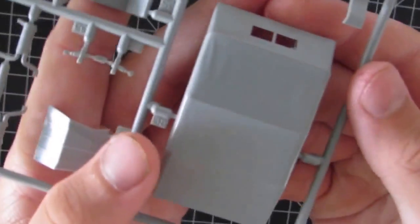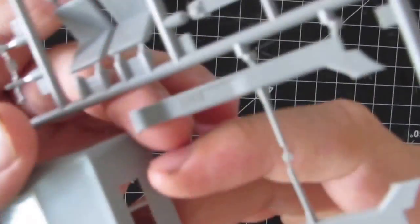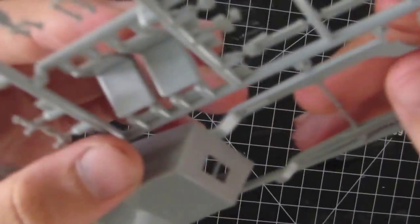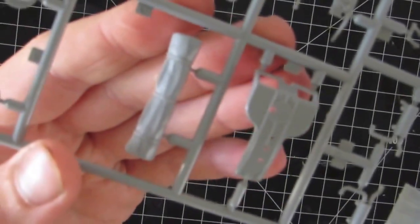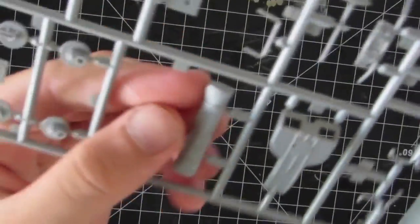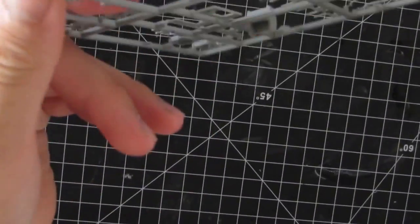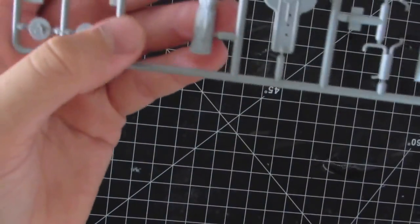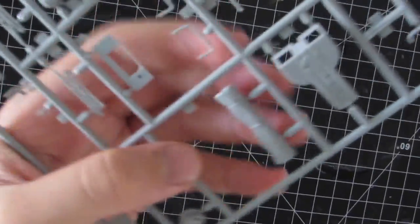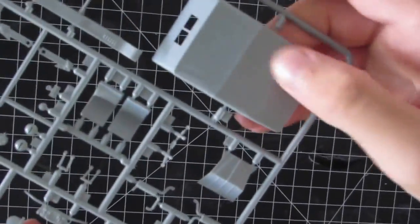So here's the canvas top. Has the nice creases. And there's a window in the back there. And this is as if you rolled up the canvas. Honestly you could probably use this as a tarp. Should look very nice if you just built it with the canvas on.